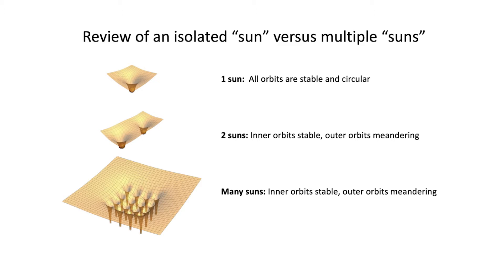In the case of many stars, we still had a situation where the lower orbits of any planet would be bound to their individual stars, but the outer planets might start meandering around the entire system.